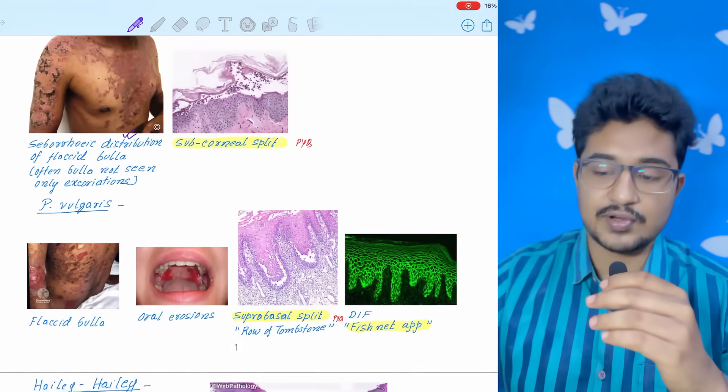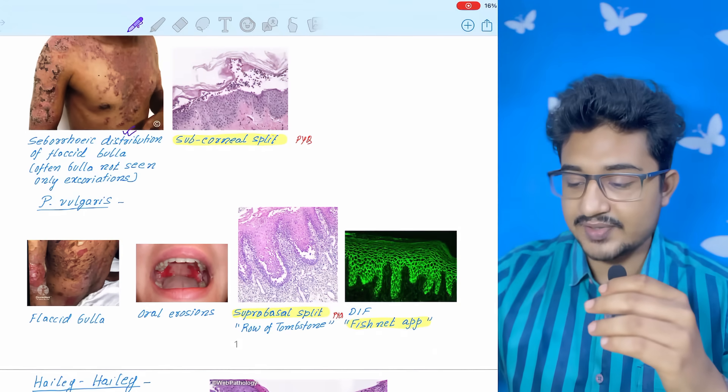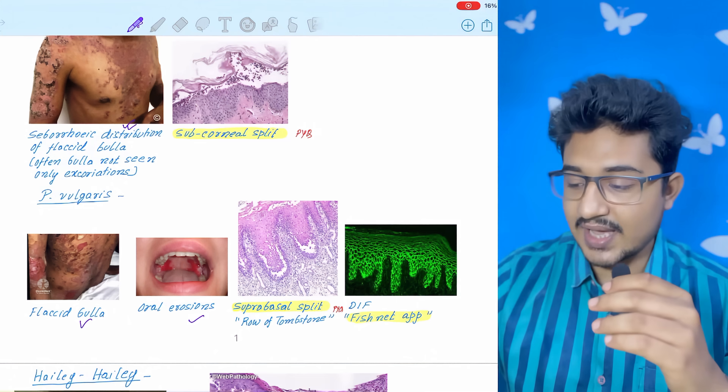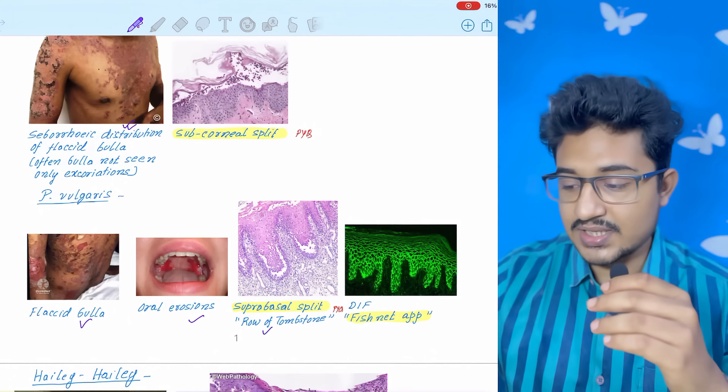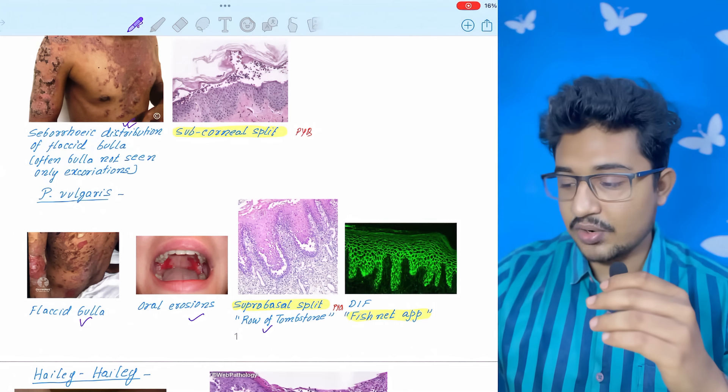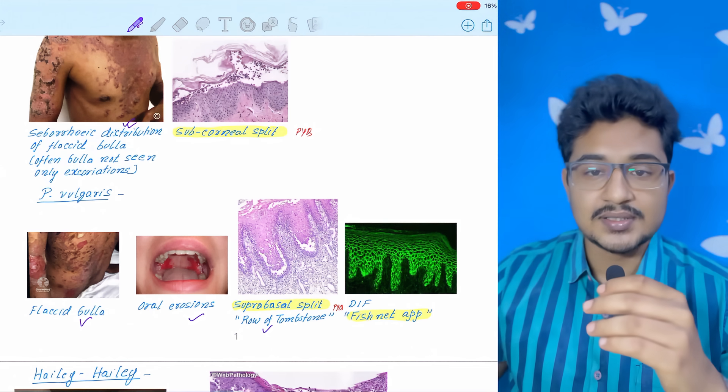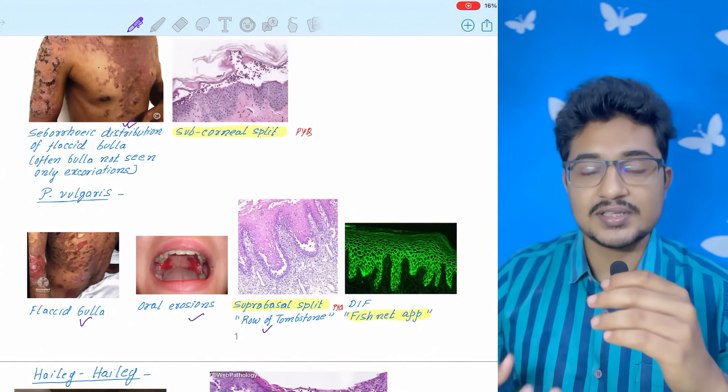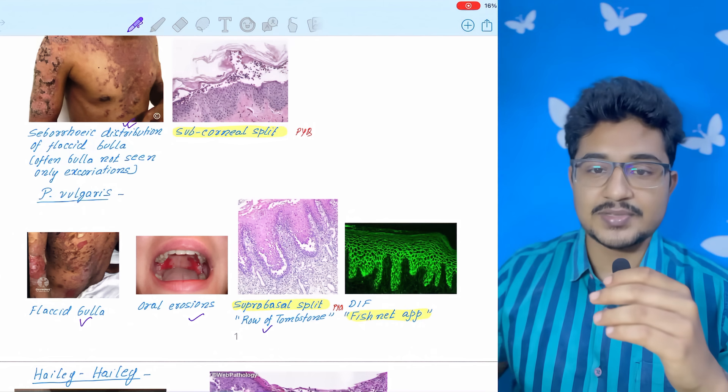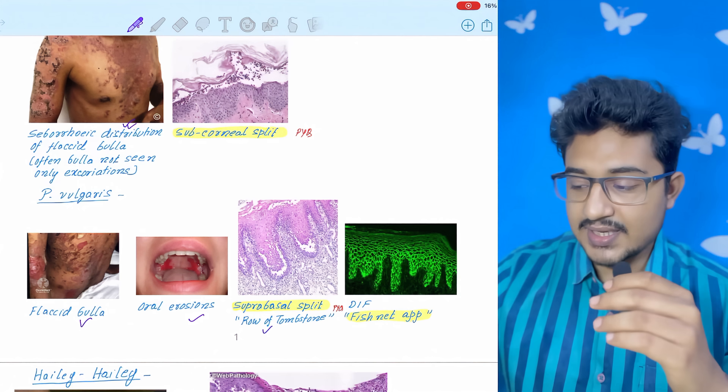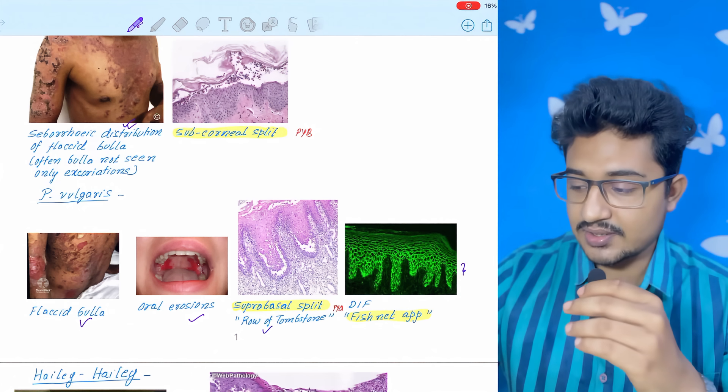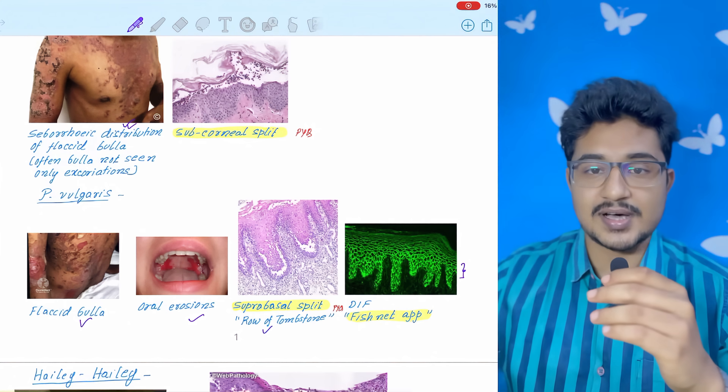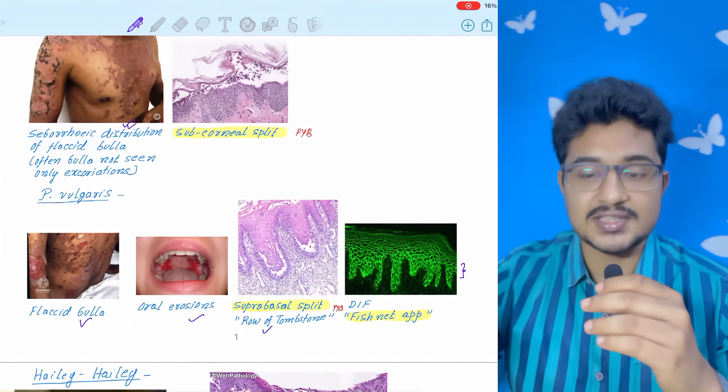Next is pemphigus vulgaris. There would be flaccid bullae, oral erosions are present, and the split is suprabasal. You see a row of tombstone appearance. On DIF in both of these two disorders you will see fishnet appearance because desmoglein-3 and desmoglein-1 are present throughout the epidermis. Concentration is different. In pemphigus foliaceus, the concentration is more in the upper side because it is the subcorneal level split.